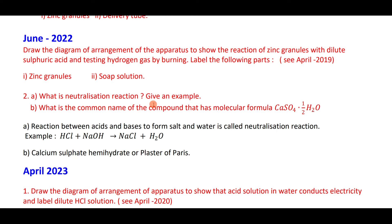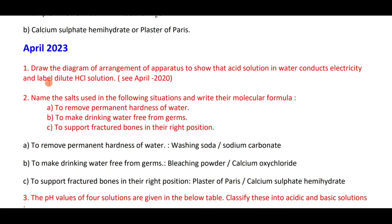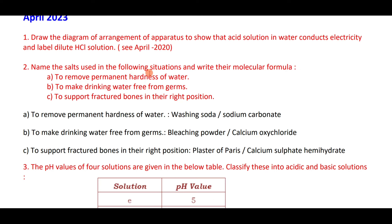The common name of the compound with molecular formula CaSO₄·½H₂O is plaster of paris. Neutralization reaction: the reaction between acid and base to form salt and water. The salts used: washing soda (sodium carbonate) to remove permanent hardness of water; bleaching powder (calcium oxychloride) to make drinking water free from germs; plaster of paris (calcium sulfate hemihydrate) to support fractured bones.